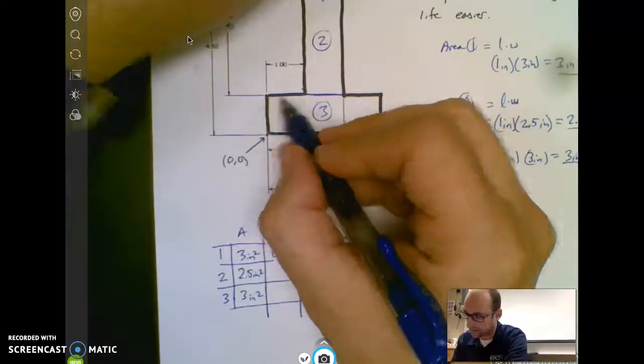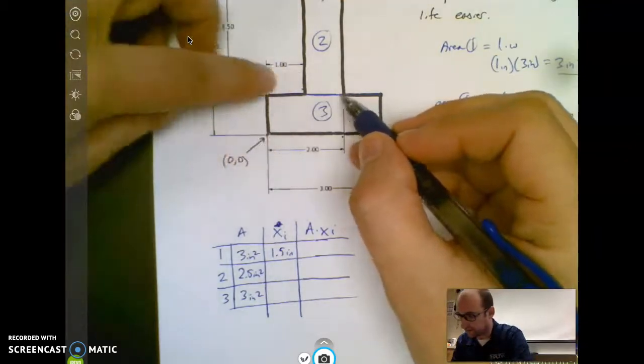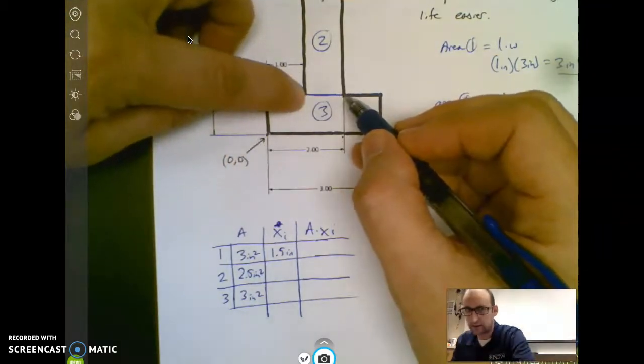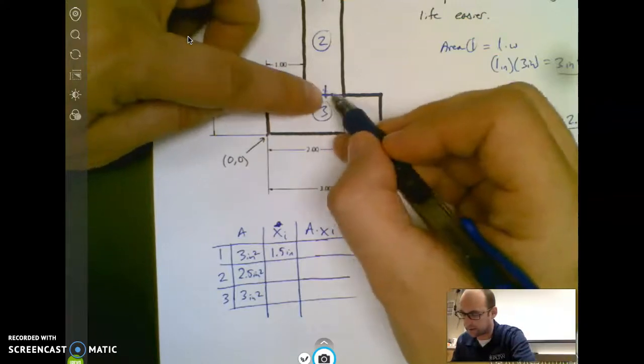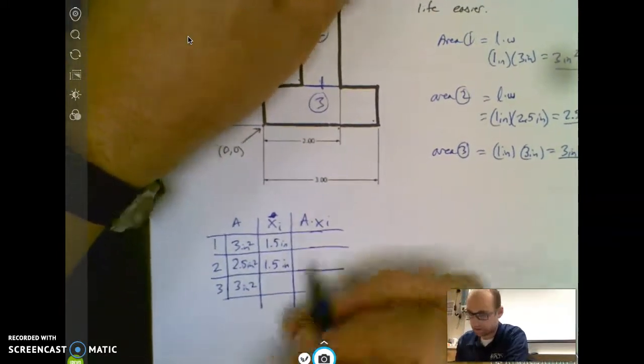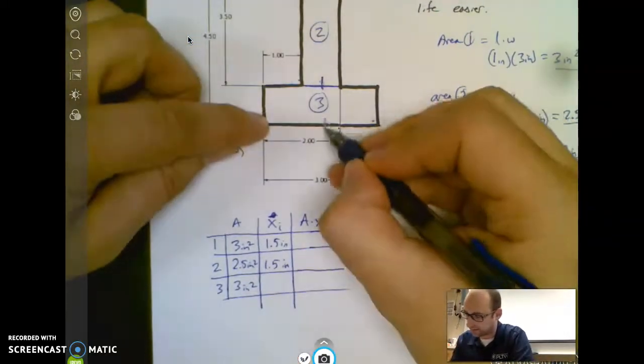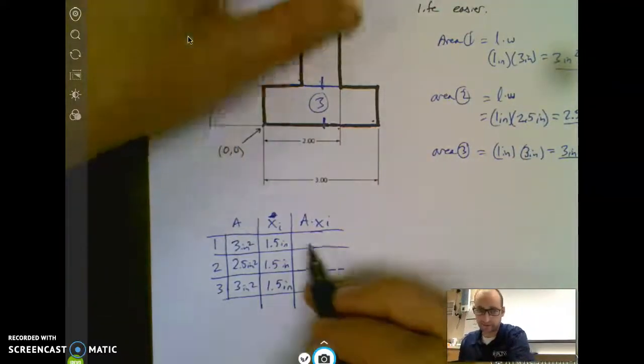Shape 2, kind of the same deal. If this rectangle starts at 1 inch in and ends at 2 inch in, then the halfway mark here on the X's is 1.5 also. And the last one, this is 3 again, and the halfway point is 1.5 on the X's.